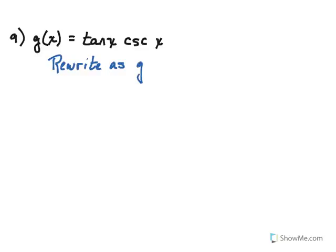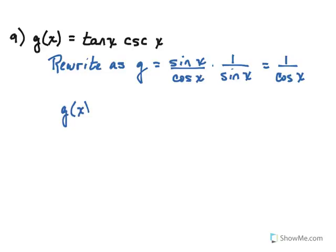We would have sine over cosine. And cosecant is 1 over sine. Notice how the sines cancel out. And all we have is 1 over cosine, which is simply secant. So what we're really just doing the derivative of is secant of x. And that's it. And you know that rule. The derivative of that, of course, is secant tangent. And you're finished.